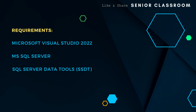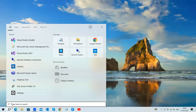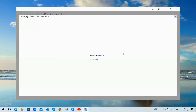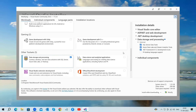Before we dive into creating an MS SQL database project, let's make sure we have the essential software and tools in place. First and foremost, you'll need Visual Studio 2022 or a later version — a powerful integrated development environment that includes tools for creating and managing your database project. Next, you'll need access to a SQL Server instance, either local or remote. Lastly, within Visual Studio, ensure you have the SQL Server Data Tools (SSDT) extension installed. In most cases, SSDT is included with Visual Studio by default — it's the tool set that allows you to work on database projects.